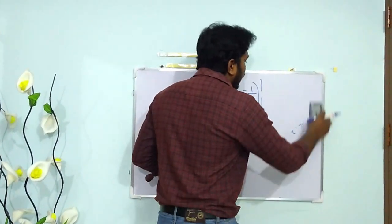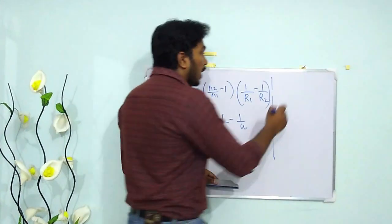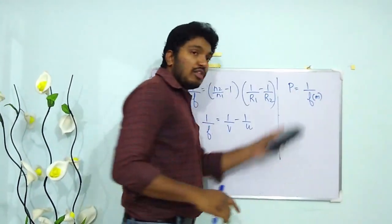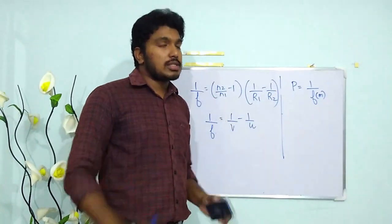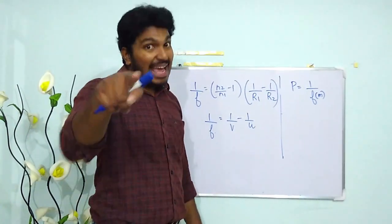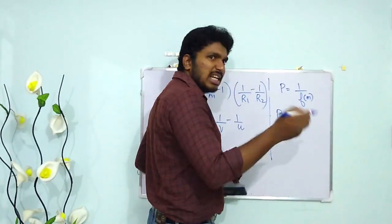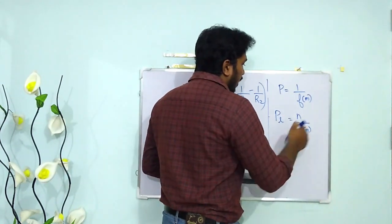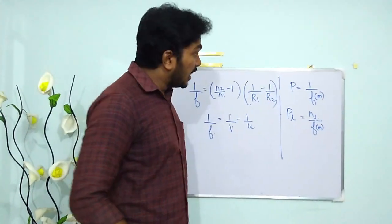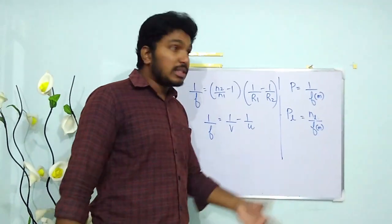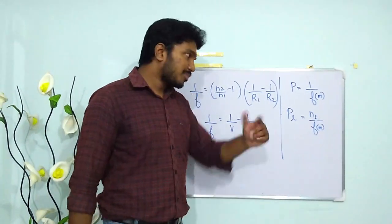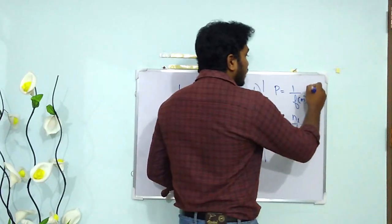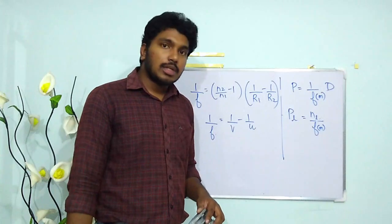If we know the focal length of a lens, we can define the power of a lens. Power P = 1/F, where the focal length must be in meters. If the medium is air, that formula applies directly. If the medium is a liquid, then power PL = refractive index of the liquid divided by F in meters. The unit of power is the diopter, written as D.